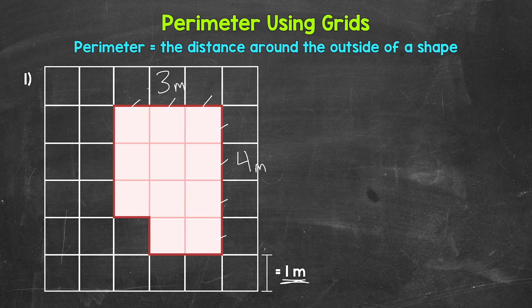Now let's go to the bottom. We have one, two meters here, then one meter here, then one meter here, and then one, two, three meters here. And those are all of our side lengths.